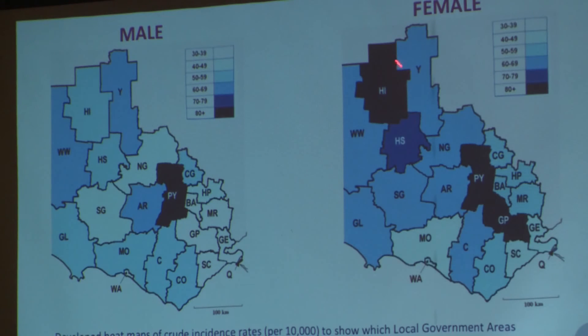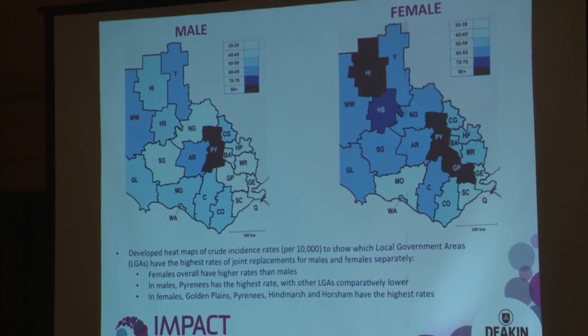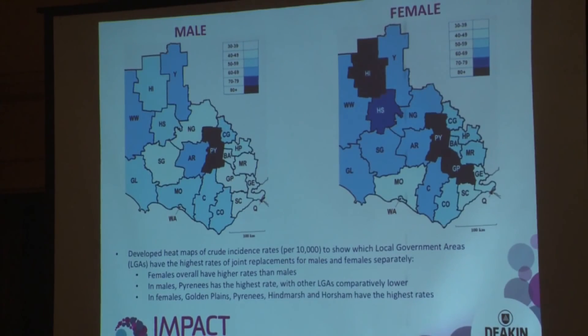For women it's still Pyrenees and Queenscliff, but there's also Golden Plains, which is quite close to Geelong, Horsham, and an area called Hindmarsh, which is again another relatively remote area. Thank you, and hopefully there'll be some interesting questions.